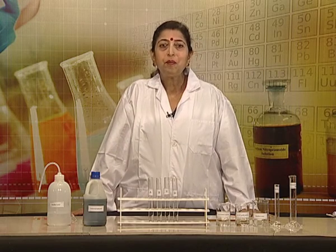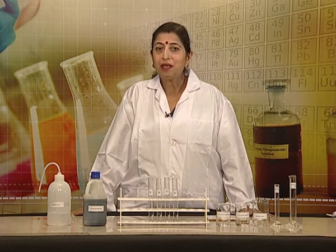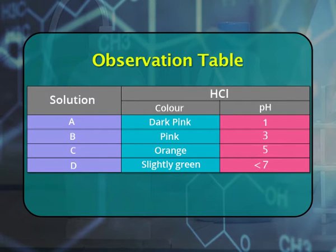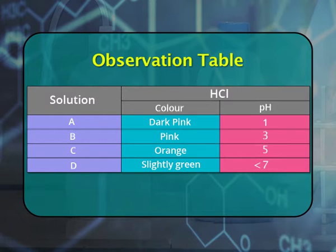Let us have a look at our observation table. For test tube A, the color obtained is dark pink, corresponding to pH value 1. For solution B, the color we got was pink, corresponding to pH value 3. For solution C, we got orange color, corresponding to pH value 5. When the same procedure was repeated with solution D, we got slightly green color, indicating an approximate pH value of 7.